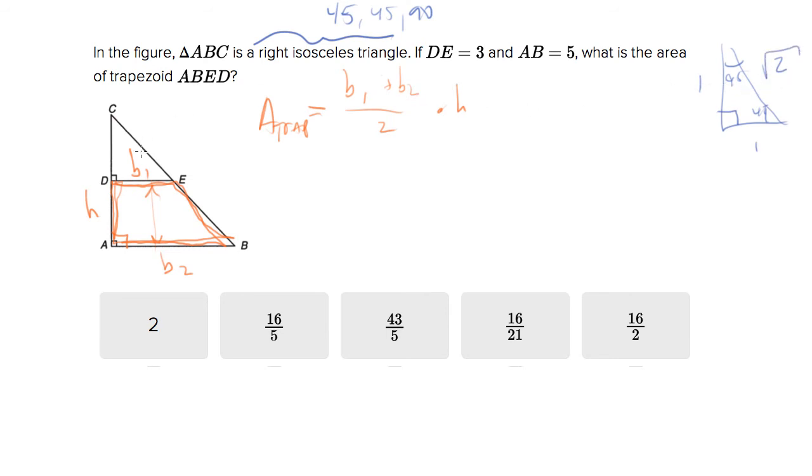So they tell you DE is 3, right, so base one equals 3, that's nice. We're already on our way. They tell you base two is 5, AB, which is base two, is 5. That's also nice.